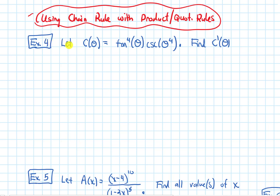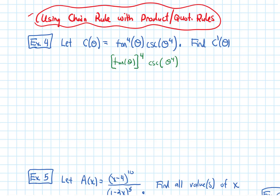Example four says let c of theta be tangent to the fourth of theta times cosecant of theta to the fourth, and we want to find the derivative. When we write a power like this on the tangent to the fourth, that means tangent of theta to the fourth power — that's just notation for how we write exponents on trig functions. And then times cosecant, where the fourth power is on the angle inside cosecant.